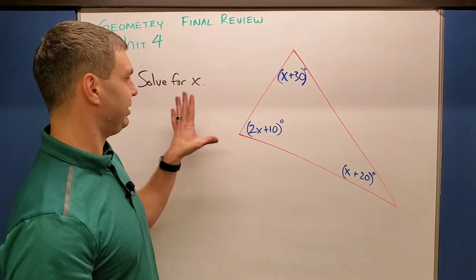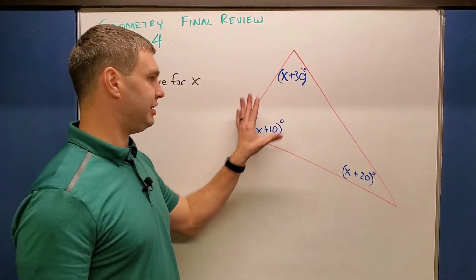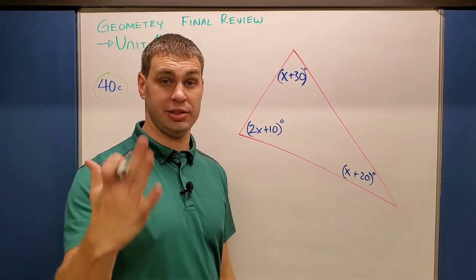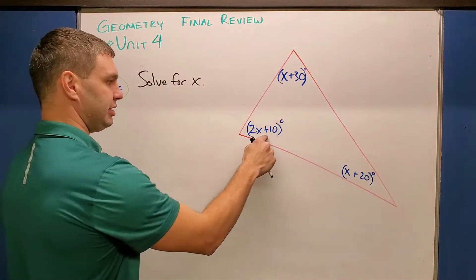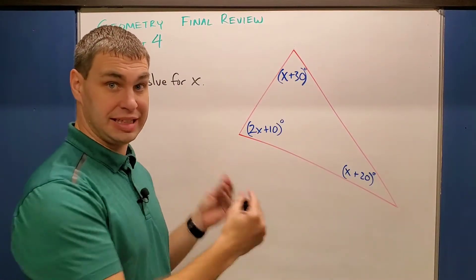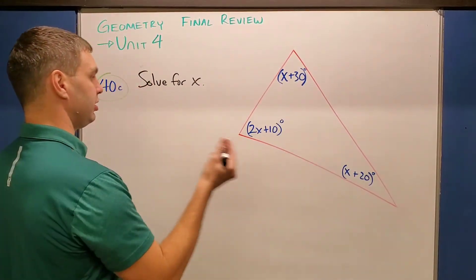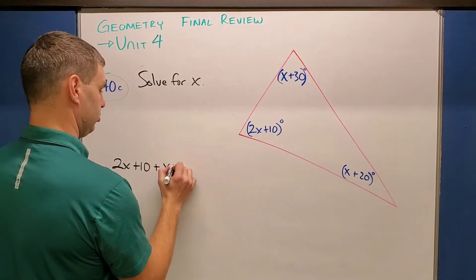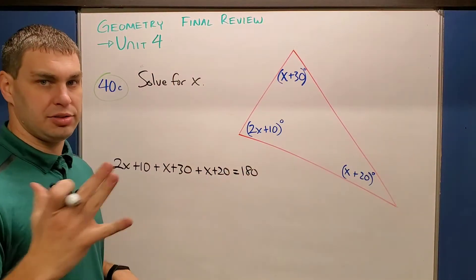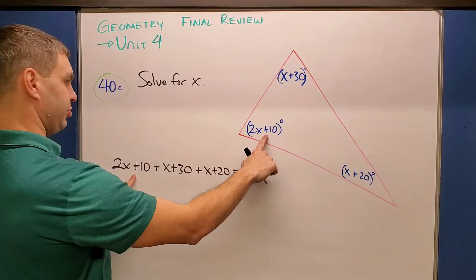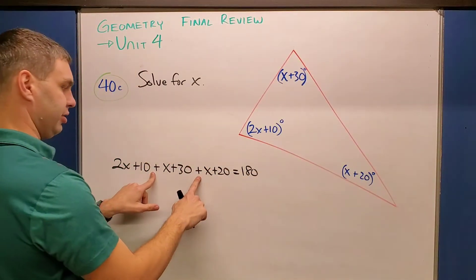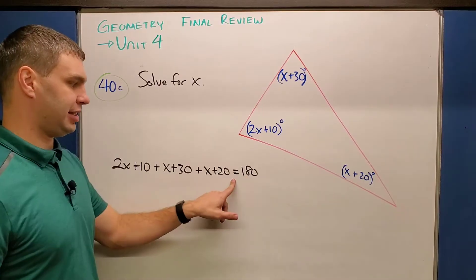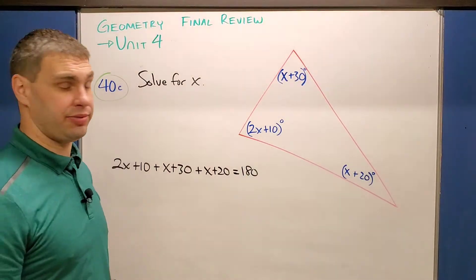This next problem deals with the triangle sum theorem, which says that all the interior angles of a triangle have to add up to be 180 degrees. So here, if we're solving for X, what I can do is take each of these, add them up, and set it equal to 180, which looks like this. So as I added those up, I just kind of went around the triangle. I did 2X plus 10, X plus 30, and then X plus 20. And I added those together, all three of those, set them equal to 180. And now I can solve for X.